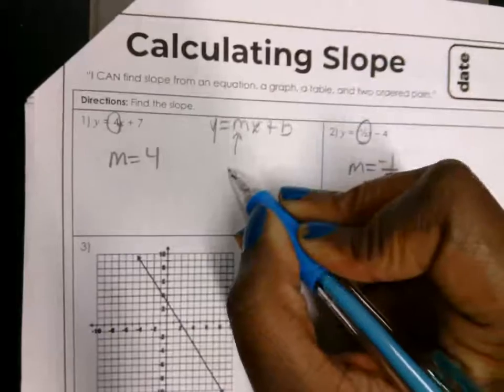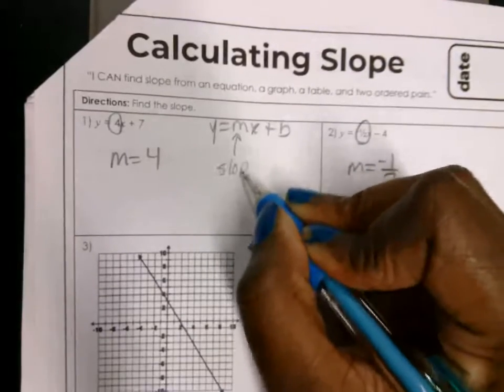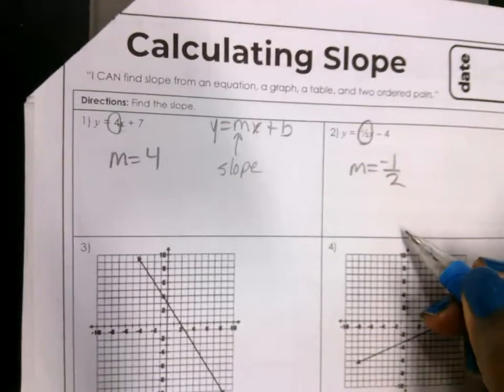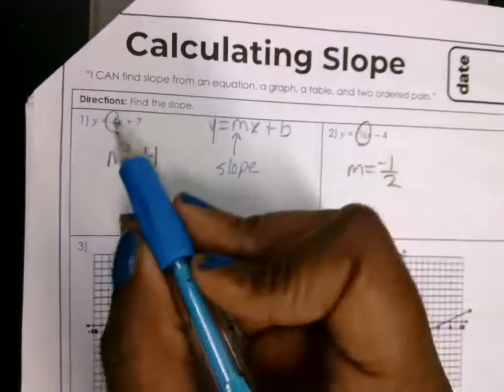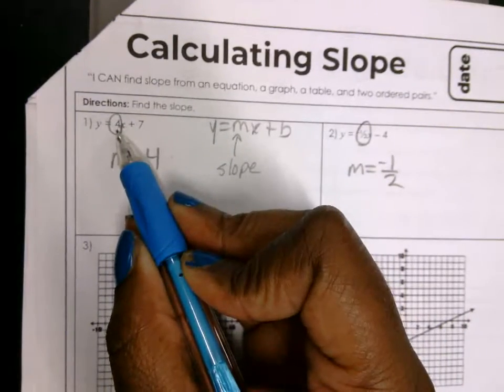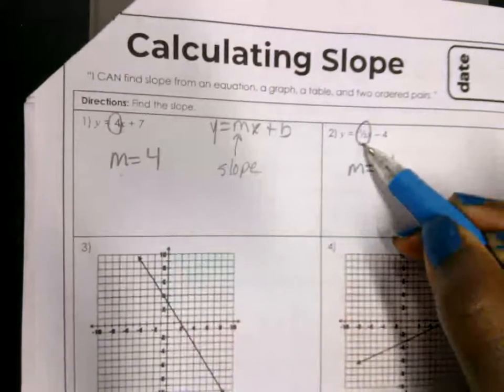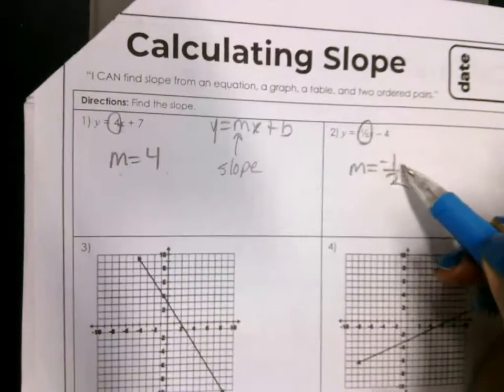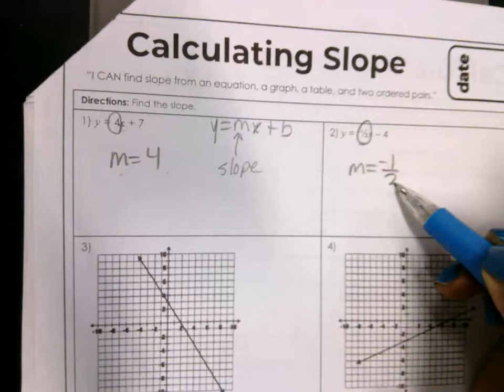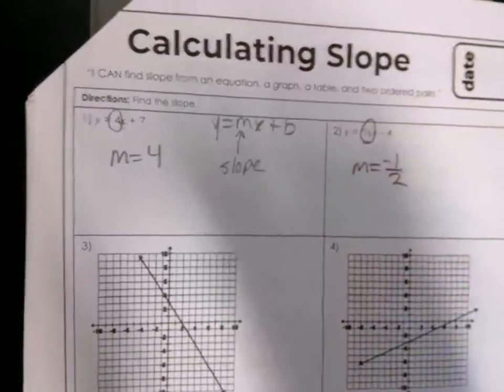When equations are written in that form, the number that's attached to x is going to be your slope. So the number that's attached to x here is 4, so your slope here is 4. The number that's attached to x here is negative 1 half, so slope is negative 1 half, okay?